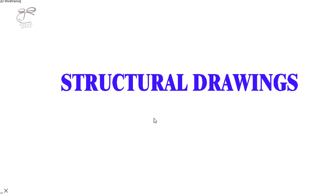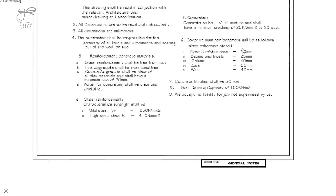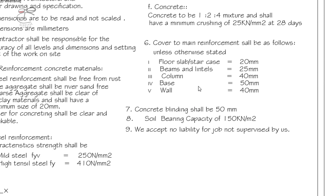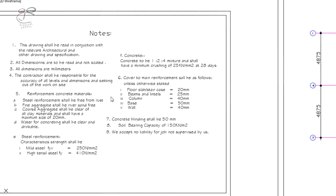This is the title of the drawings. Then we've got general notes. This talks about the concrete mixture, which is a ratio of 1:2:4. The recommended concrete cover for the floor slab, beams, columns, column footings, and walls. Note that.